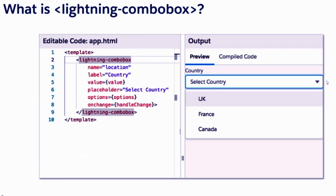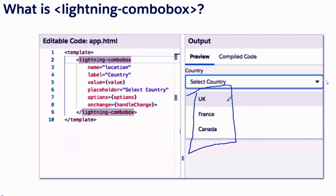In the combo box, you have labels that appear when you click on it to choose a value. When you click on any option in the combo box, there is a value of that option that will be sent. Every single option in the combo box comes in two sections — one is the label you see on screen, and when you click the option, the value will be sent.